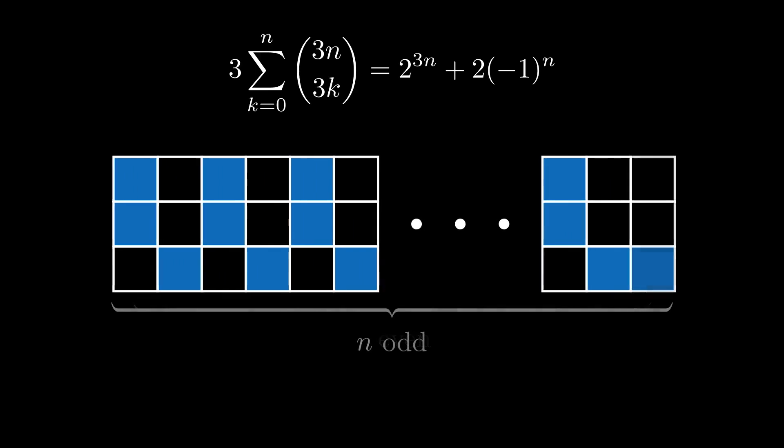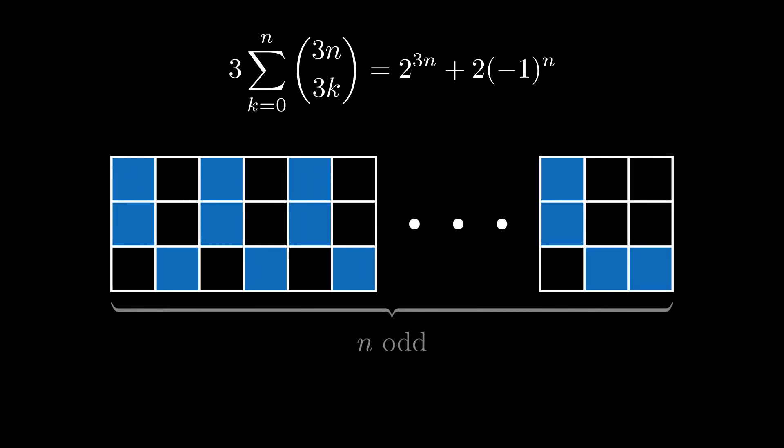When n is odd, the exception pattern looks like this, or this. In those cases, sets A1 and A2 have an extra element. Again, just what we had hoped for.